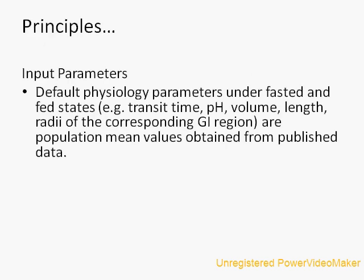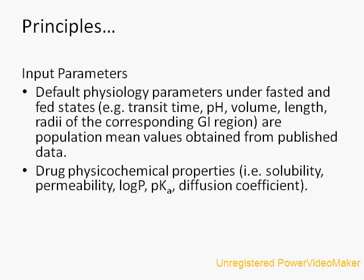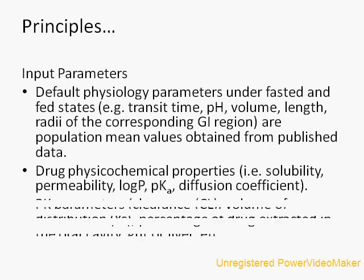Now let us see what the input parameters are. Certain default input parameters are available, such as transit time, pH, volume, and length, which are generally estimated from population mean values from databases. Drug physicochemical properties that must be provided include solubility, permeability, log P, pKa (dissociation constant), partition coefficient, and diffusion coefficient.